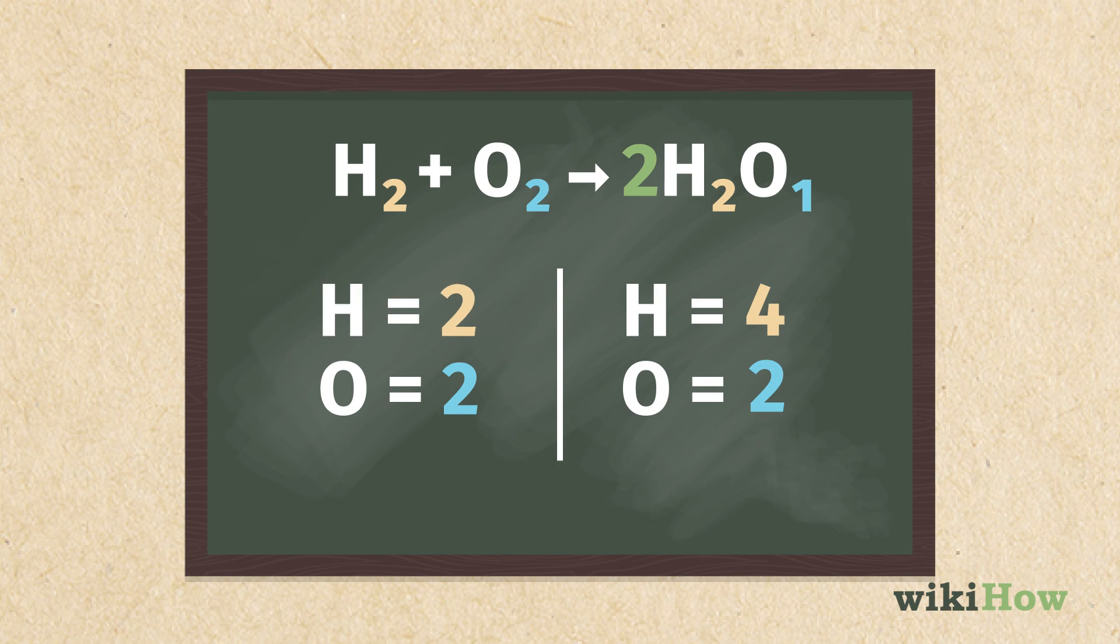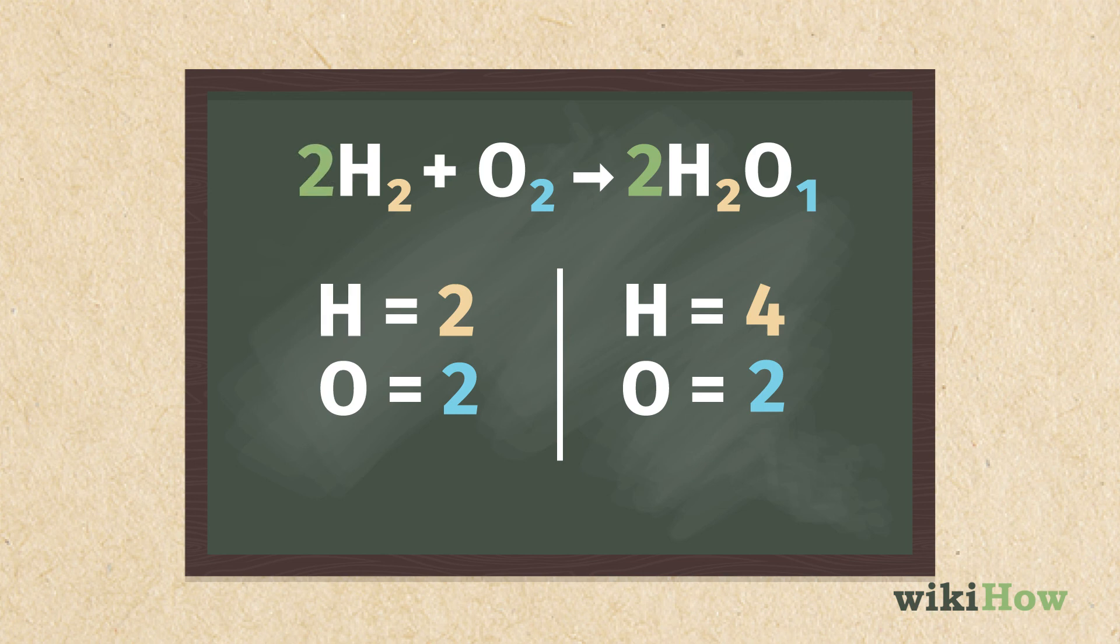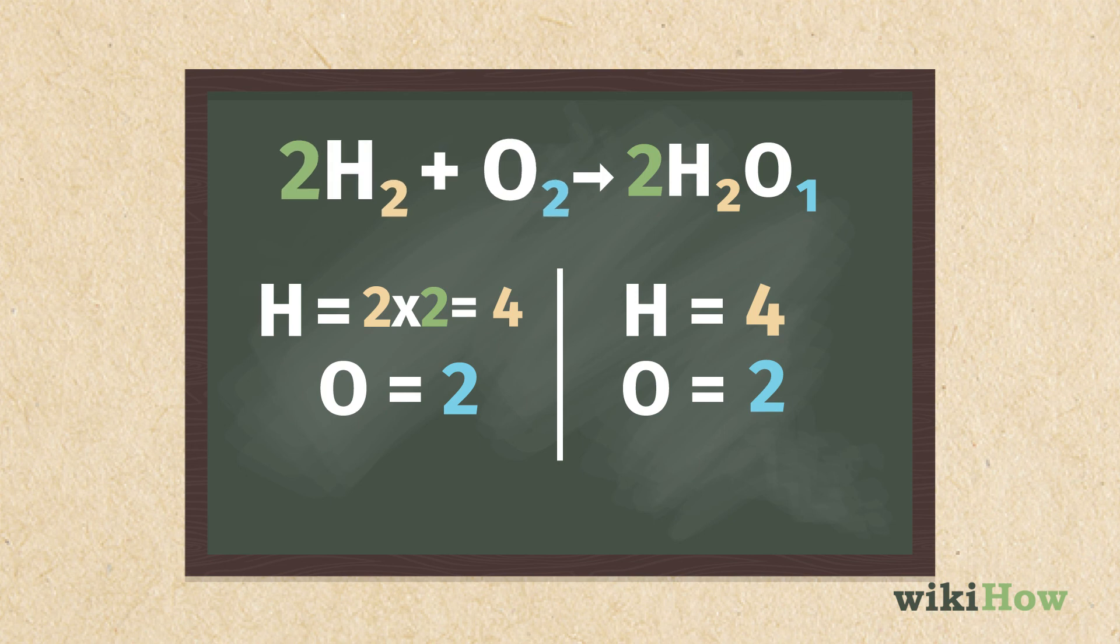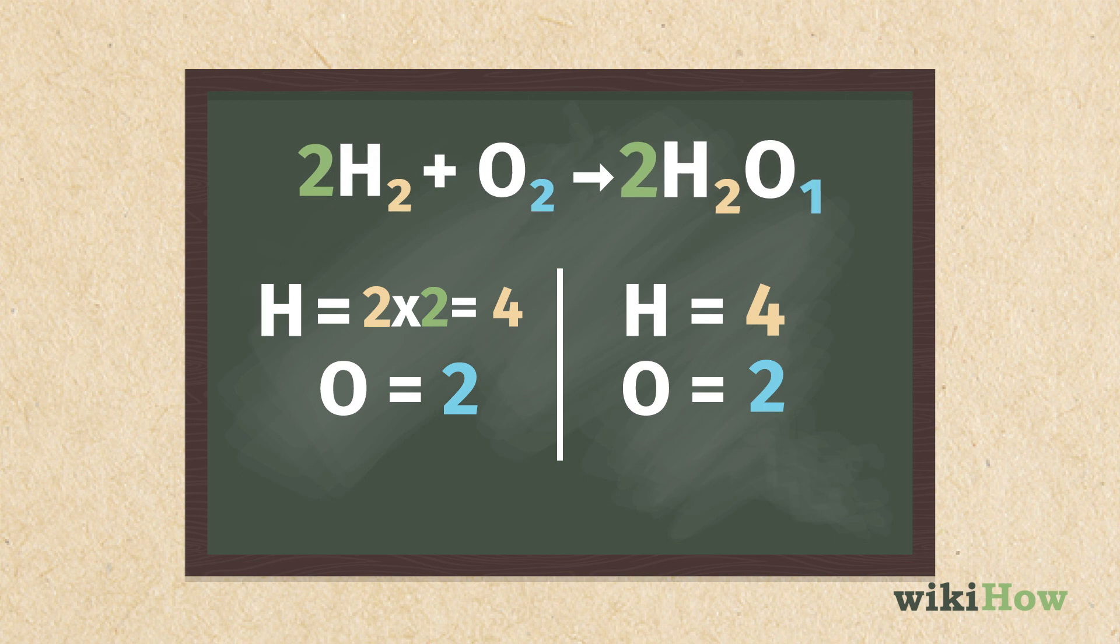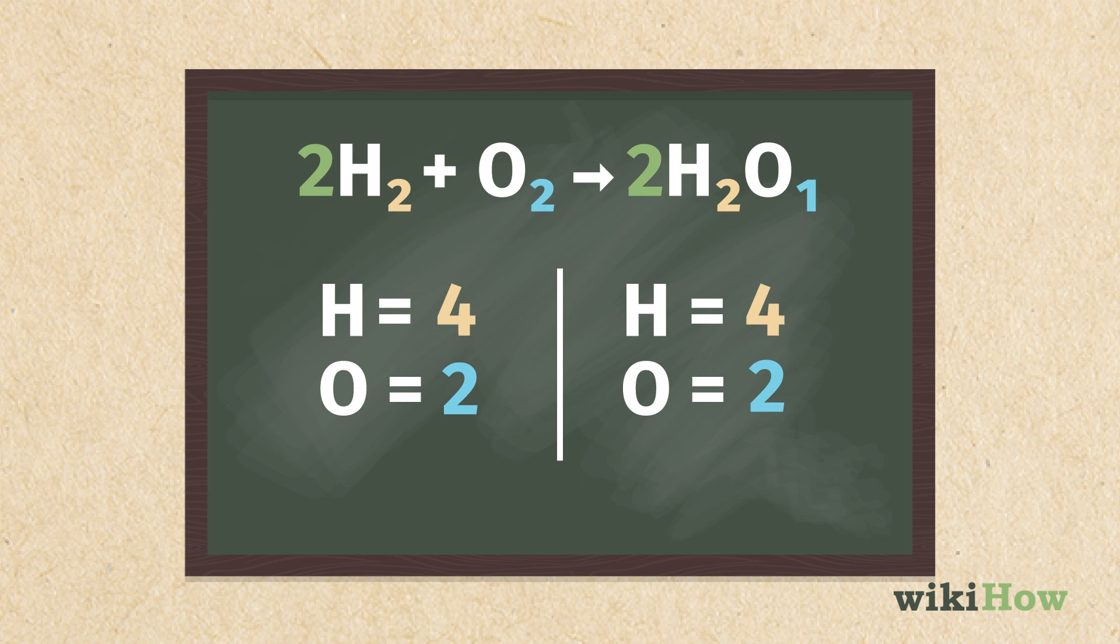To balance this, add the coefficient 2 before H2 on the left side of the equation so there are four hydrogen atoms on each side, like 2H2 plus O2 equals 2H2O. Now, the number of atoms in each element is the same on both sides of the equation, so the equation is balanced.